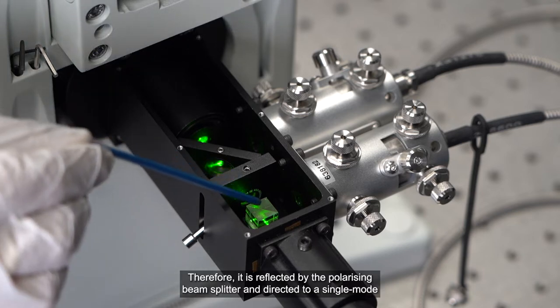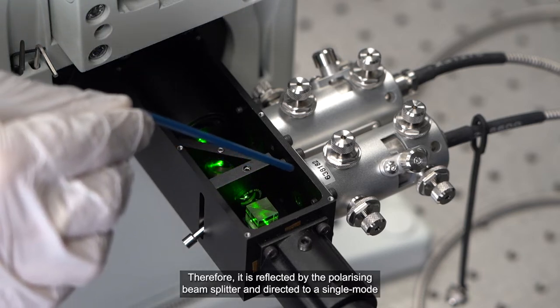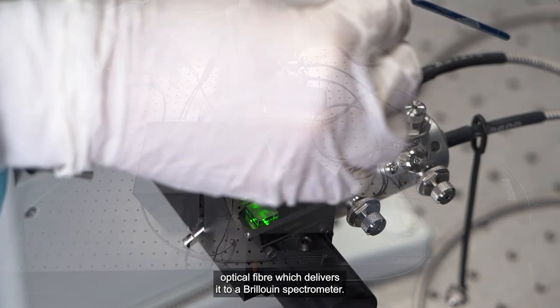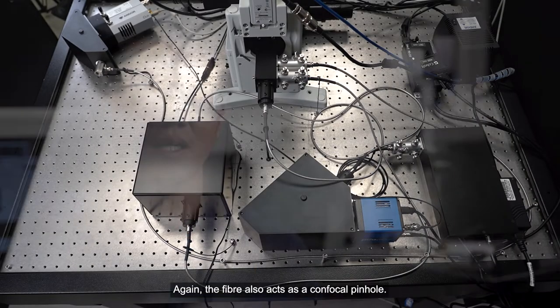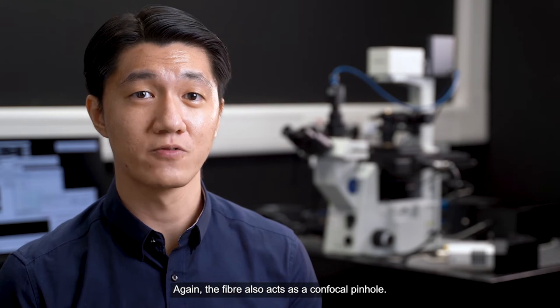Therefore, it is reflected by the polarizing beam splitter and directed to a single-mode optical fiber which delivers it to a Brillouin spectrometer. Again, the fiber also acts as a confocal pinhole.